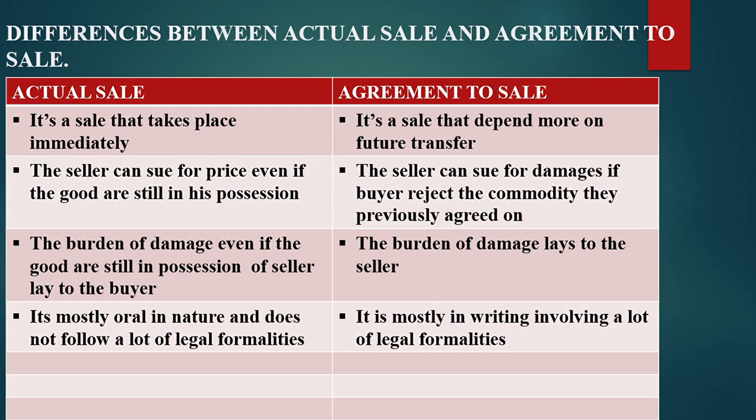There are differences between an actual sale and an agreement to sale. One difference: in actual sale, it is a sale that takes place immediately. For instance, you go to a kiosk, you want a packet of maize or a packet of flour, you pay the required amount and you are given the packet of flour. An agreement to sale is a sale that happens based on future transfer.